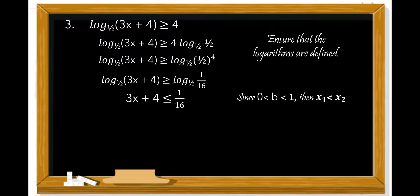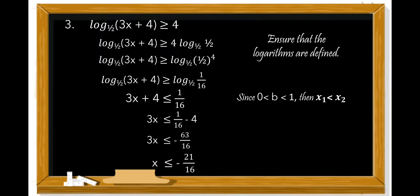Because the base is less than 1 but greater than 0, we interchange the inequality sign from greater than or equal to less than or equal. Transposing 4, we have 3x ≤ 1/16 minus 4, which gives 3x ≤ negative 63/16. Dividing both sides by 3, x ≤ negative 21/16. Therefore, the solution set is (negative infinity, negative 21/16].